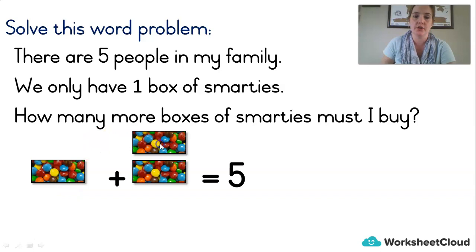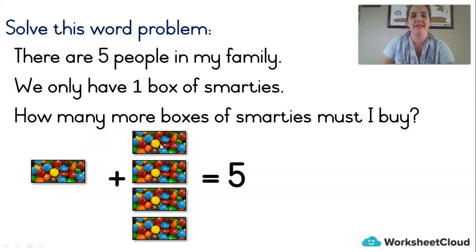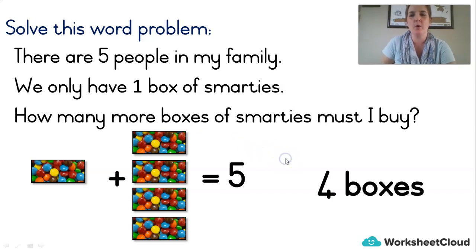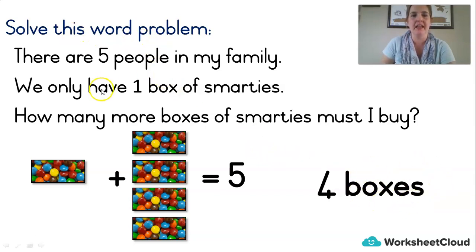I've got one. Let's add: two, three, four, five. And how many is that? Four. Four boxes of Smarties — that's what I need to buy. Do you see the word in the answer? Because it was a word problem: how many more boxes of Smarties must I buy? Four boxes.